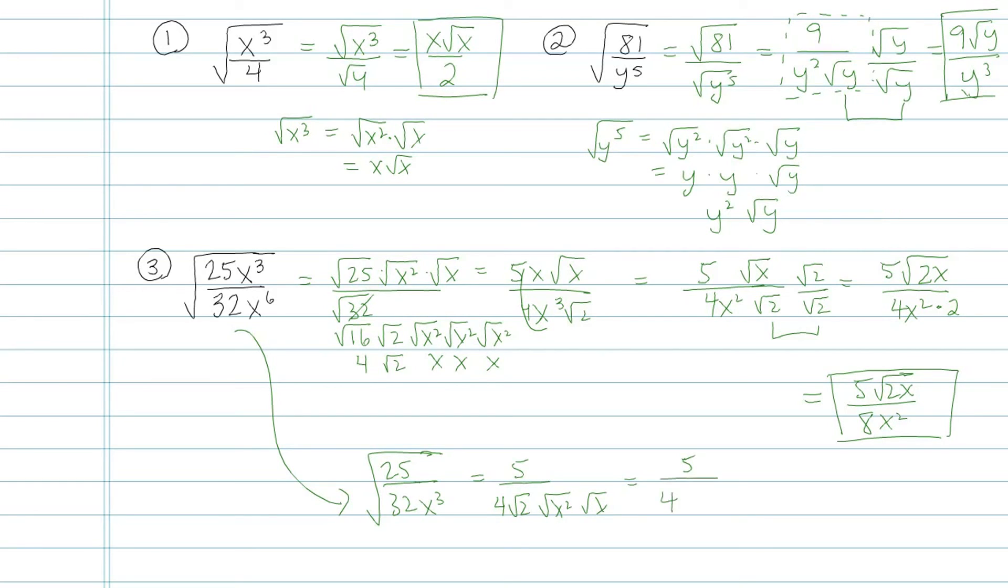5 over 4x root 2x. Then the thing I'm rationalizing with is root 2x. So either way, I'm going to end up with that same answer right there. It just depends on whether you want to simplify to begin with or simplify at the end.